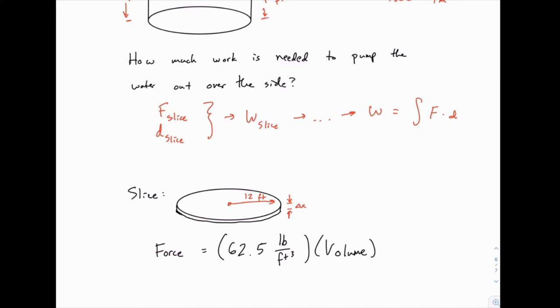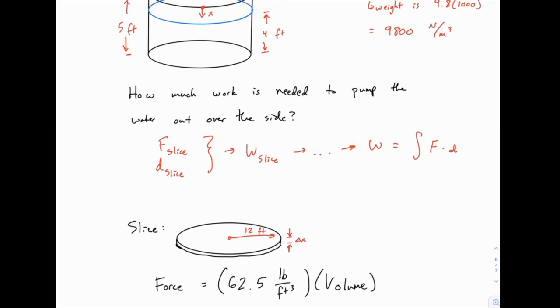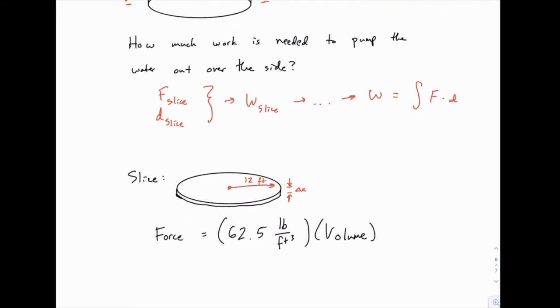Just like with the problem lifting the chain, we had a unit weight, and then we had a small unit, and we multiply them together to get the weight. Here, our unit is this volume of a disc that we need to deal with, and then we multiply by 62.5. If we were dealing with metric units, we would take the volume and multiply by 9,800, as is shown at the top of the screen. So in either case, the weight will be the unit weight times the volume of the slice. And that's going to be true for all of these pumping problems.